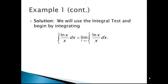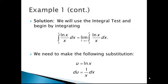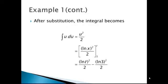We begin by integrating the natural log of x divided by x on the interval from 3 to infinity. Since this is an improper integral, we rewrite it as the limit as t approaches infinity of the integral from 3 to t of natural log of x divided by x. We make the substitution u equals the natural log of x, so that du equals 1 over x dx. We end up with the antiderivative of u with respect to u, and using the power rule we get u squared divided by 2.